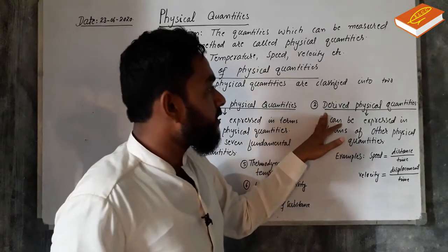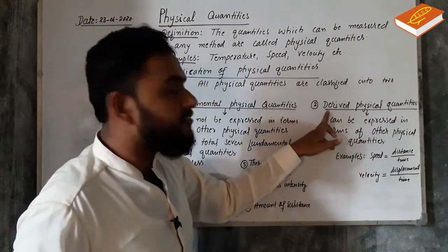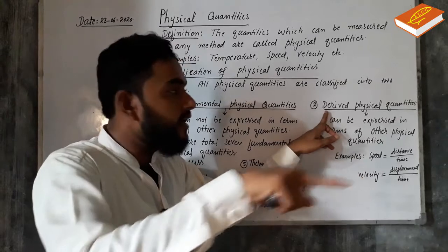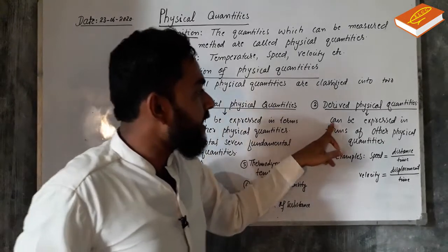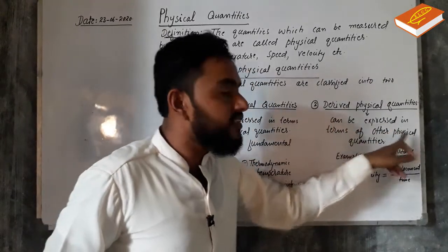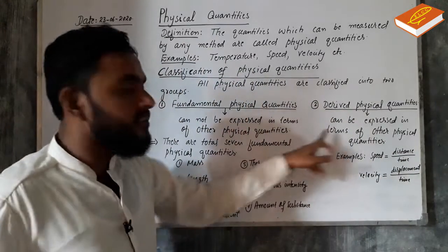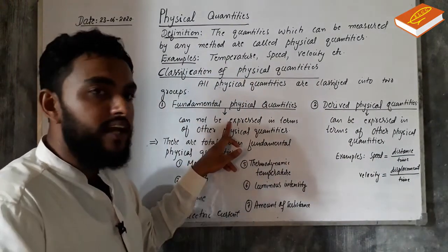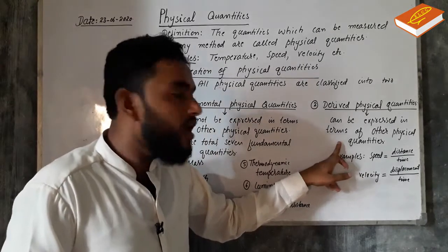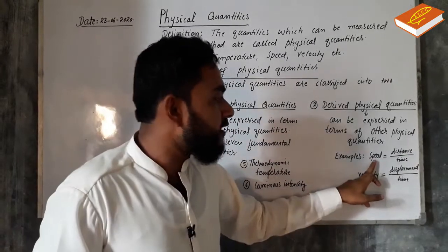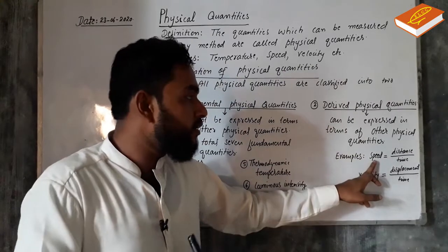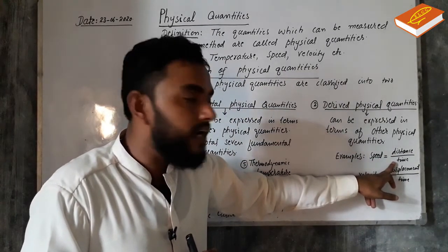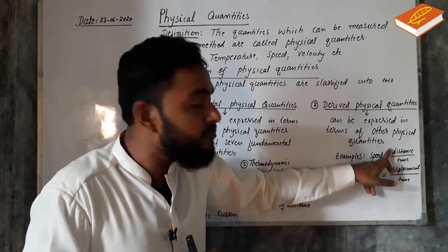In the second group, if you derive physical quantities, you can derive the quantity. It can be expressed in terms of other physical quantities. This is the opposite definition — if it can be expressed in terms of other physical quantities, and if you divide that with time, you can get the derived quantity.